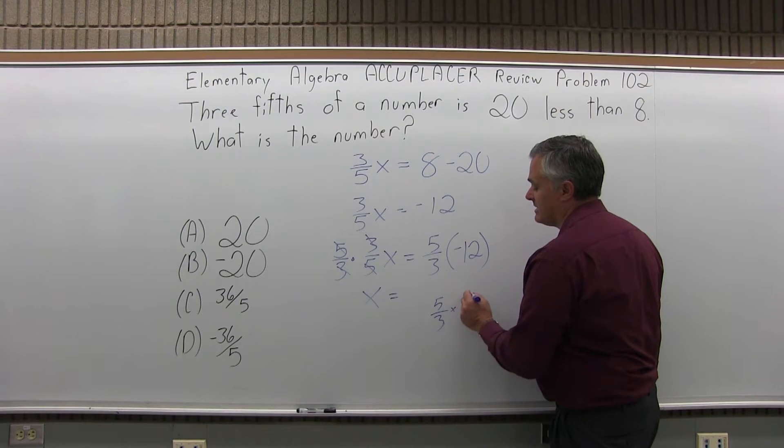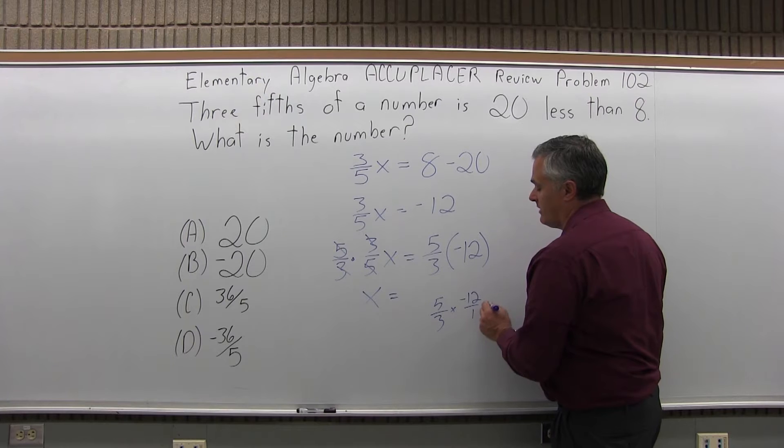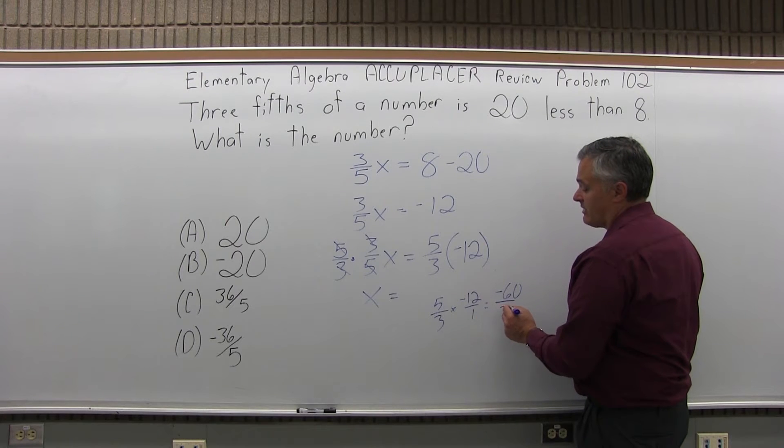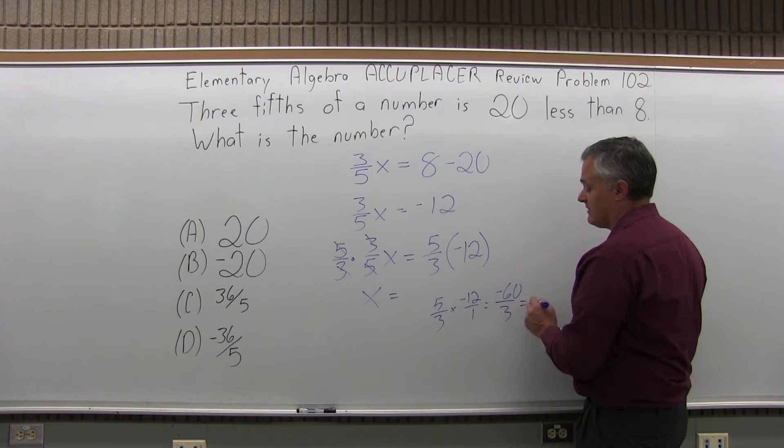You can do five-thirds times negative 12 over 1. Top times top, five times negative 12 is minus 60. Bottom times bottom, three times one is three. Negative 60 divided by three is still minus 20.